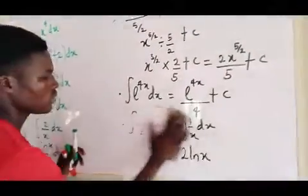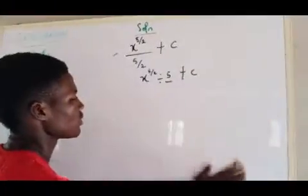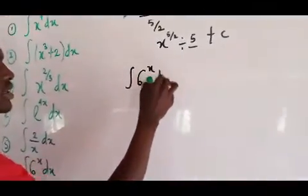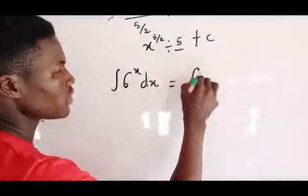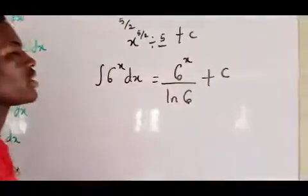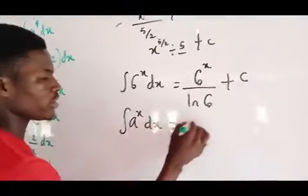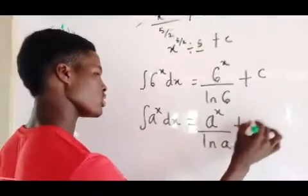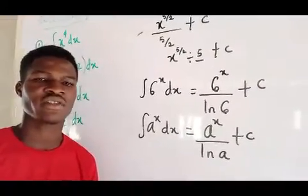The last example: integral of 6 to the power x dx. As given in the last video, this becomes 6 to the power x over ln(6), plus c. In general, for integral of a to the power x dx, the result is a to the power x divided by ln(a), plus c. Don't forget to subscribe, like, and share this video. Thank you.